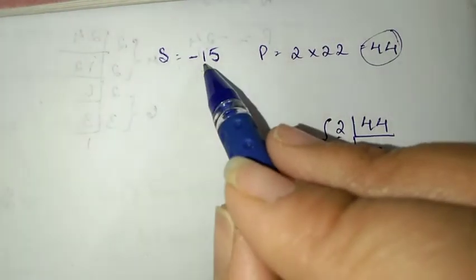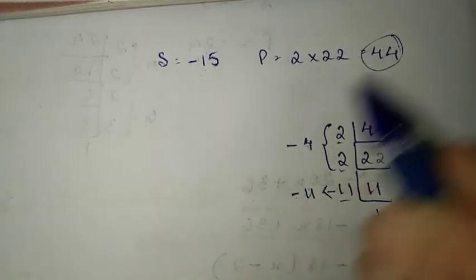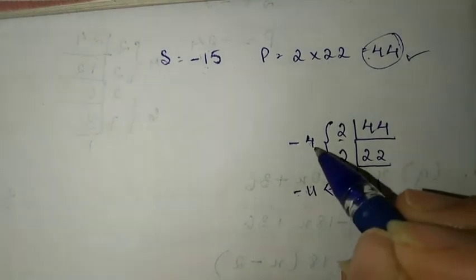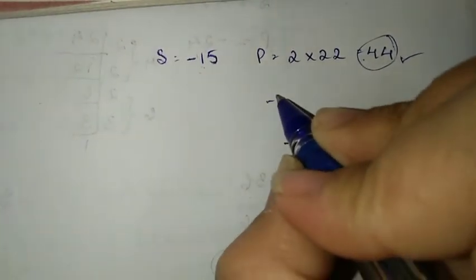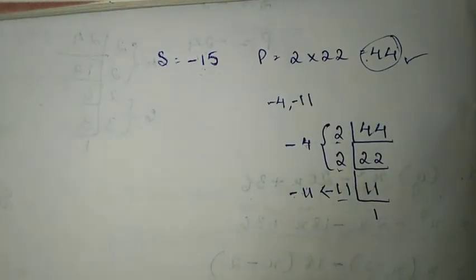Minus 15: 2 times 2 is 4, and 11. So 11 minus 4 gives us 7, not 15. So this combination doesn't work.